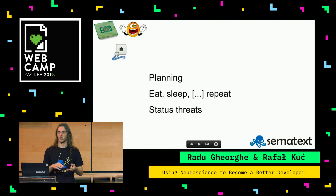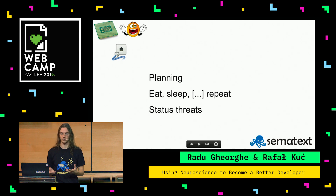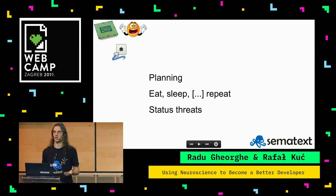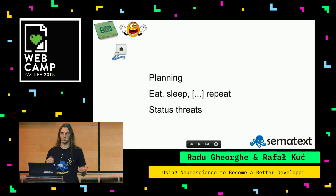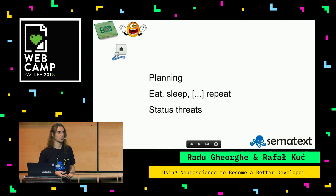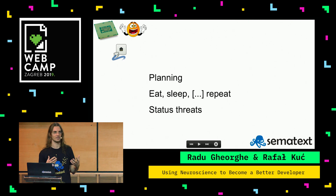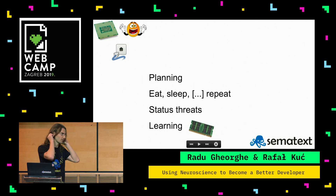My part has three parts: planning — I want to talk about the importance of planning and how we can account for how our brain works. Then I want to talk about our energy cycle during the day and how to account for that to be more productive. The third one is about communication and feedback — I call this status threats, because we can very easily feel offended and get defensive and counterproductive. And then Rafael is going to talk about learning.